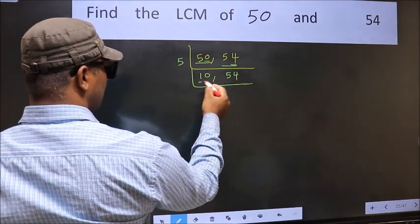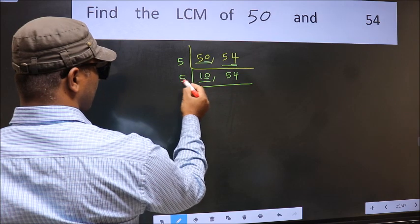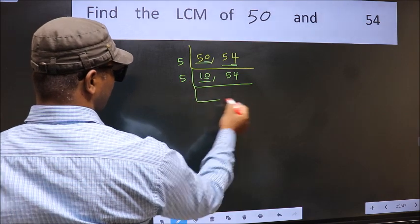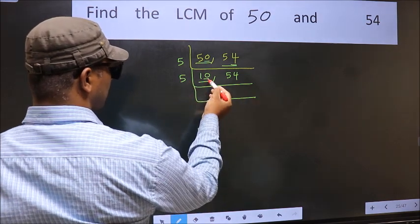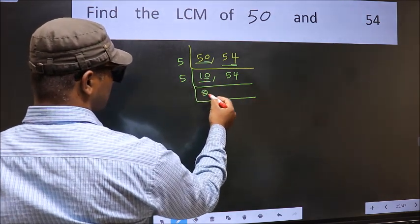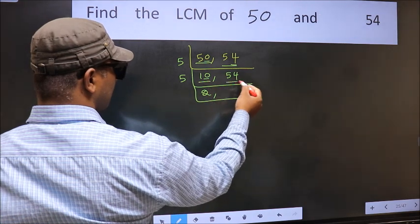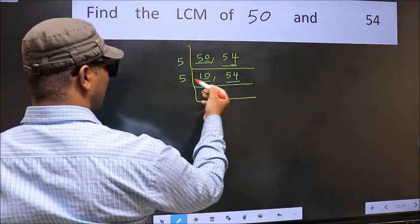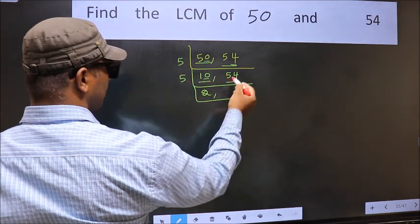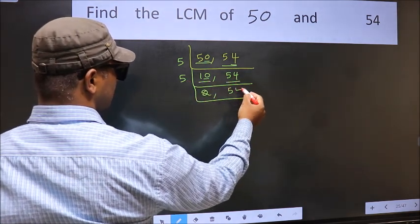Now here we have 10. The last digit is 0, so take 5. When do we get 10 in the 5 table? 5 times 2 is 10. Now the other number, 54 — not divisible by 5, so we write it down as it is.